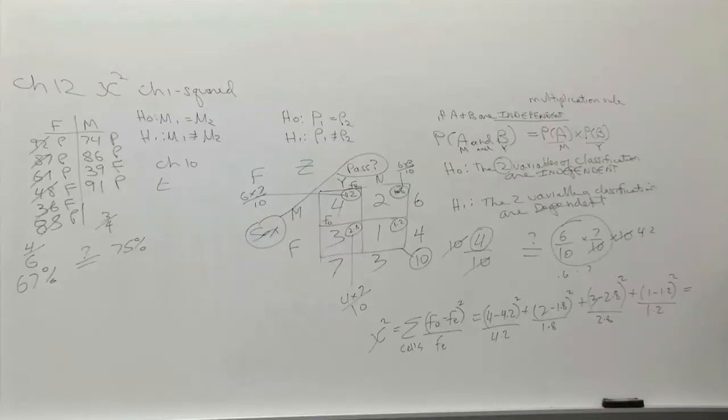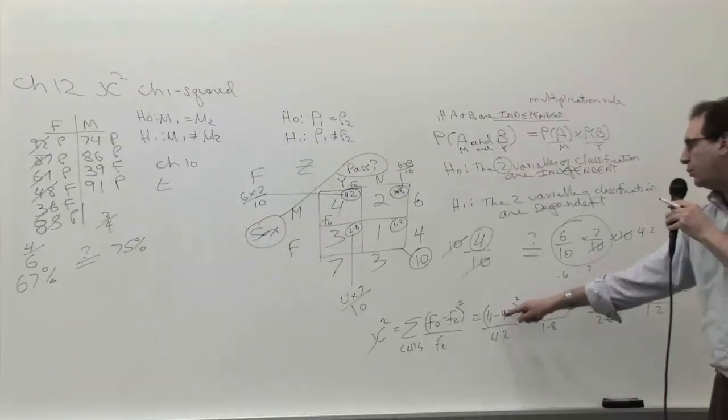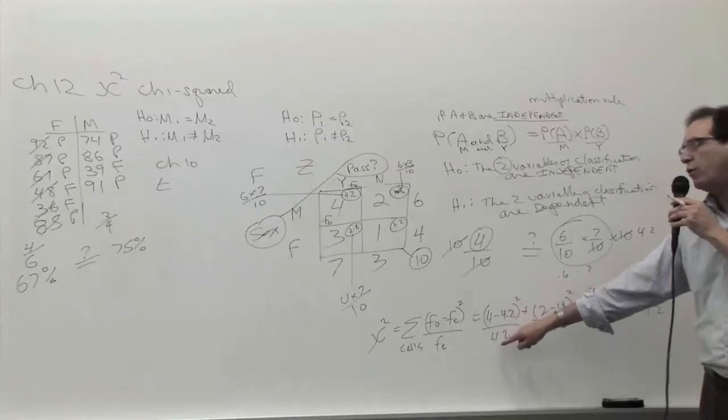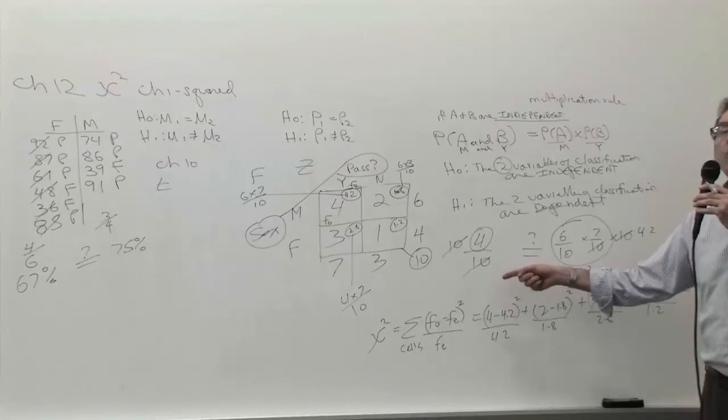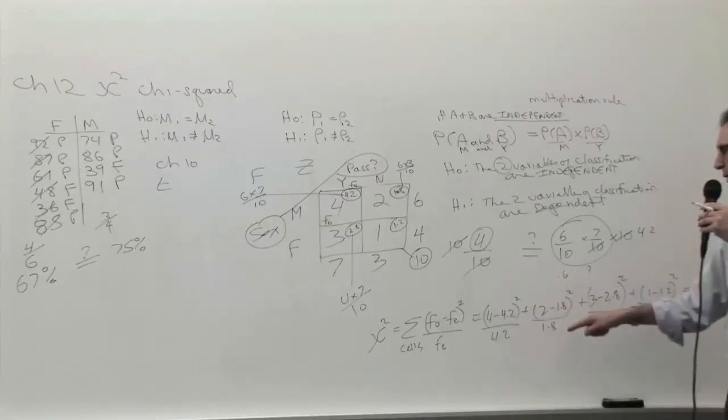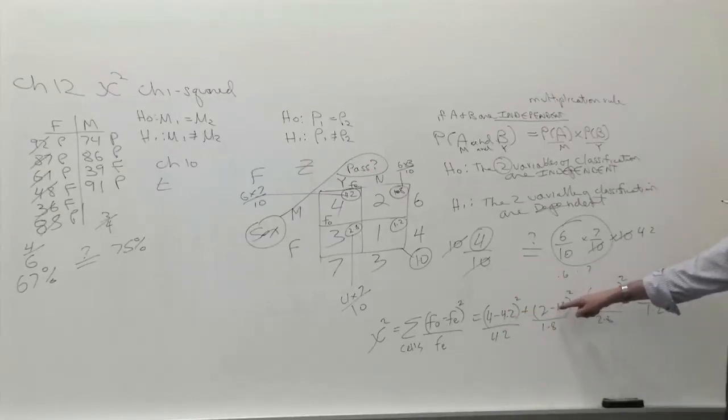Now this will come out as definitely a positive number. And so how much is 0.2 squared? 0.04 divided by 4.2. This comes out to like 0.01, it will come out to 0.01, it comes out to also about 0.01. So the whole thing, I would say, comes out to roughly about 0.03, if I had to take a guess.